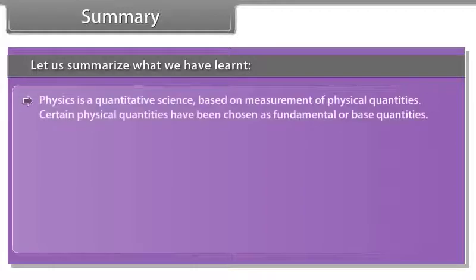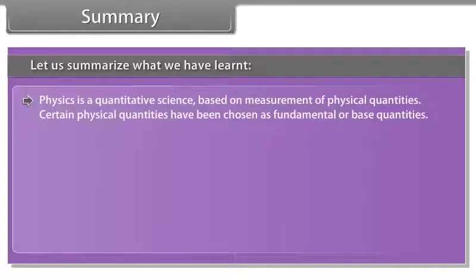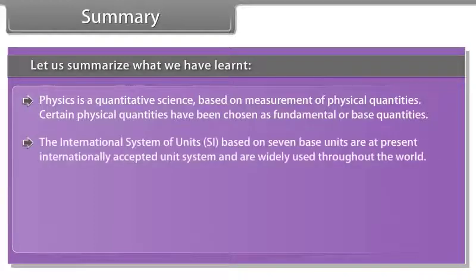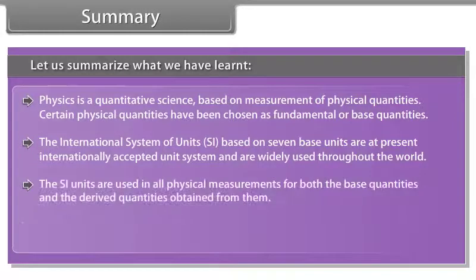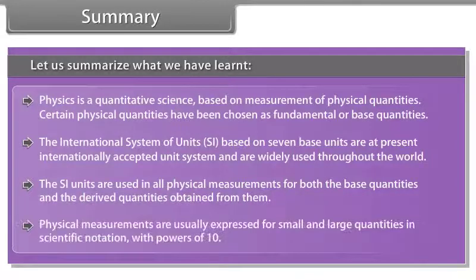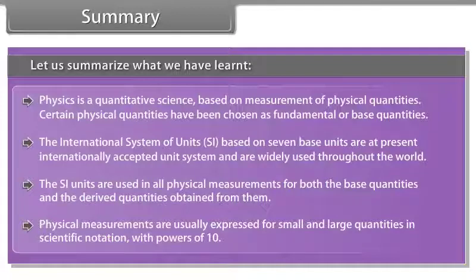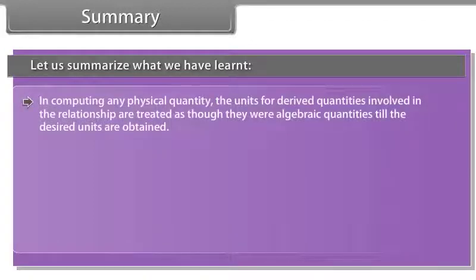Summary. Let us summarize what we have learnt. Physics is a quantitative science based on measurement of physical quantities. Certain physical quantities have been chosen as fundamental or base quantities. The international system of units SI, based on seven base units, are at present internationally accepted unit system and are widely used throughout the world. The SI units are used in all physical measurements for both the base quantities and the derived quantities obtained from them. Physical measurements are usually expressed for small and large quantities in scientific notation with power of ten.